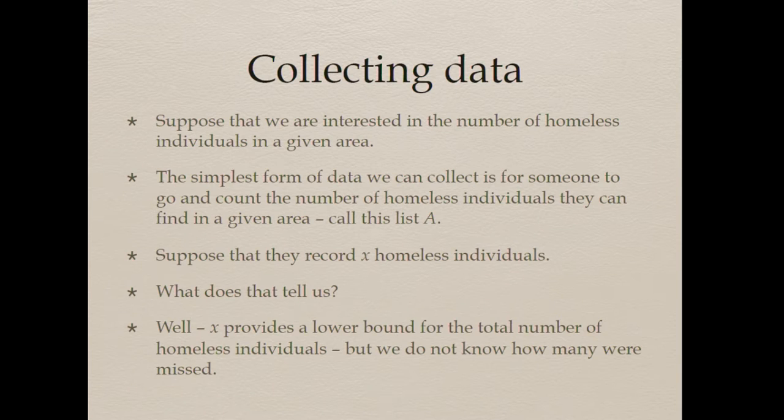In order to answer these questions we're going to have to collect some data. We're going to try and observe the population as best we can. Taking the example of the homeless population in some area, we might send a particular person out and say: go round this area and see how many individuals from the homeless population you can find. They go out and list X individuals. That gives us some information — we know there must be at least X homeless individuals in the population. The problem is, we've probably missed someone.